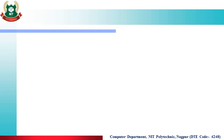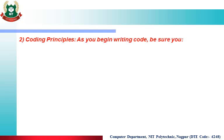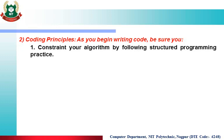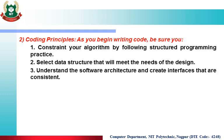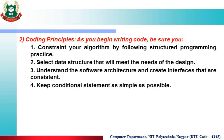That is the Preparation Principle. The next one is the Coding Principle. As you begin writing code, constrain your algorithm by following structured programming practices. Select the data structure that will meet the needs of the design. Understand the software architecture and create interfaces that are consistent. Keep conditional statements as simple as possible.